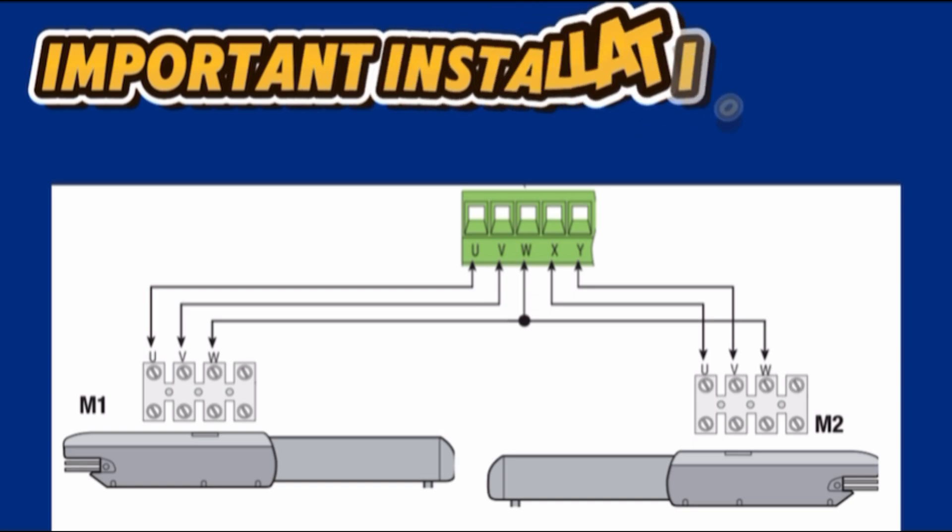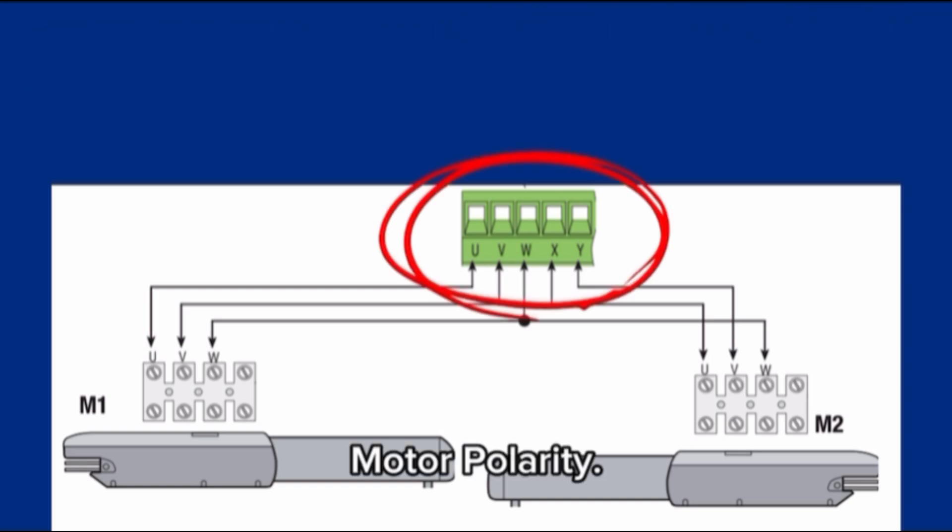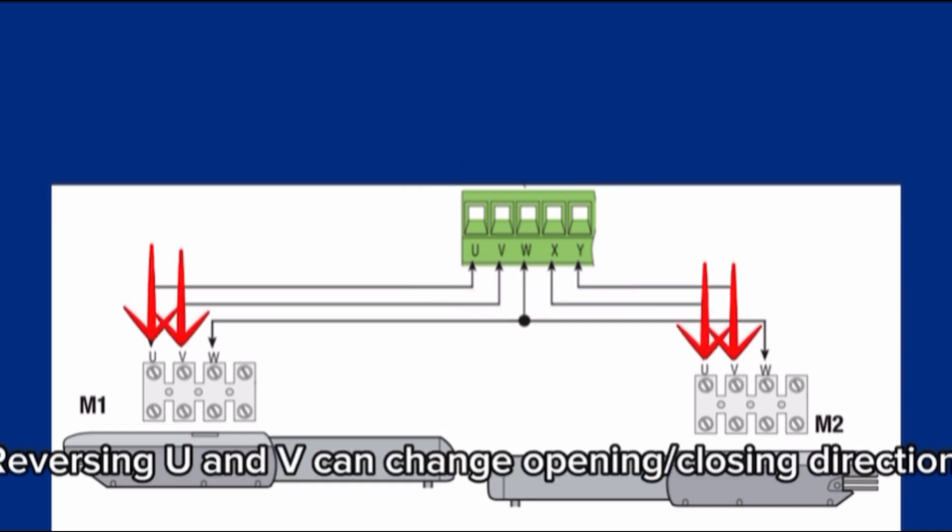Important installation tips. Motor polarity. Double check the terminals of UVW orientation for correct rotation. Reversing U and V can change opening closing direction.